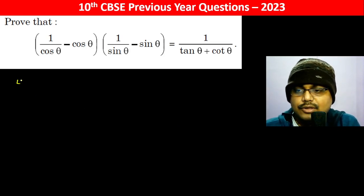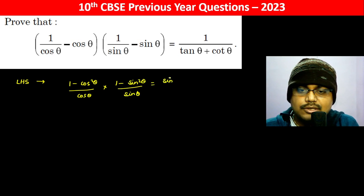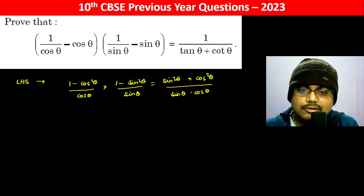Prove that LHS equals (1 minus cos square theta) by cos theta into (1 minus sin square theta) by sin theta. So what happened: sin square theta into cos square theta divided by sin theta into cos theta — it cancels, so this is actually sin theta into cos theta.